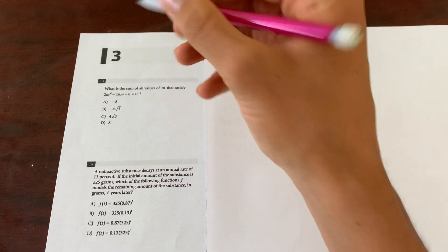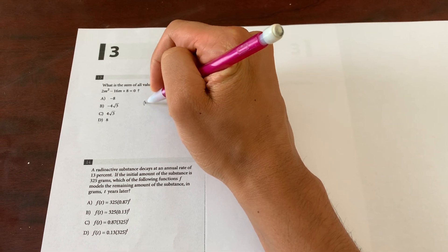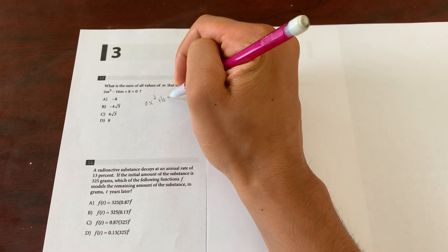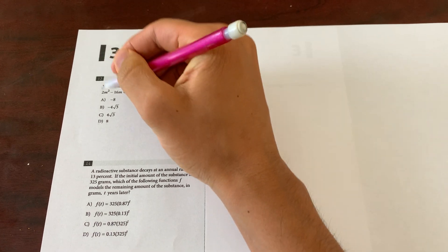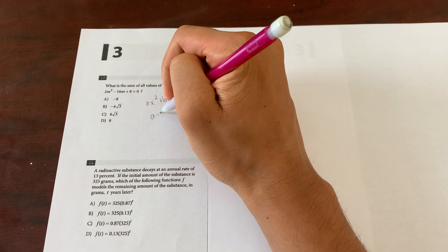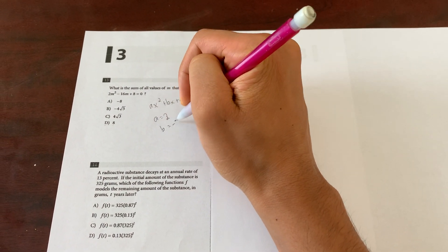And as you all should know, any form of a quadratic can be written as ax squared plus bx plus c. So in this case, what is a? A equals 2, b equals negative 16.